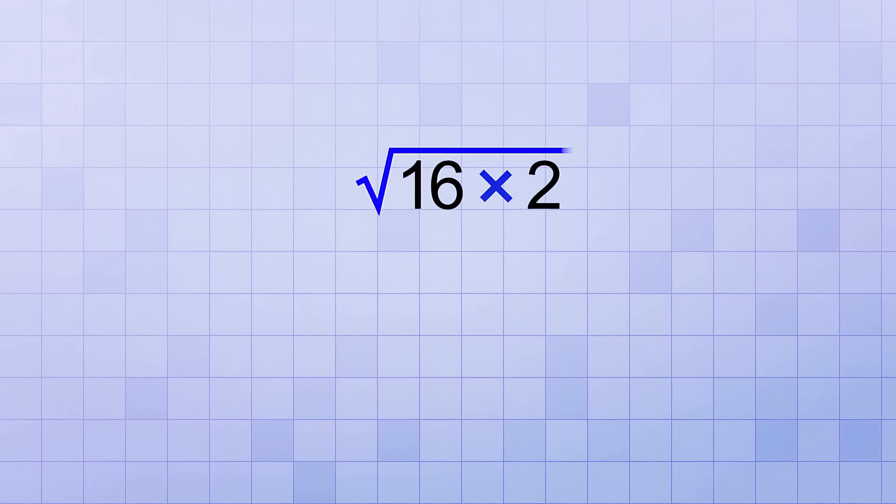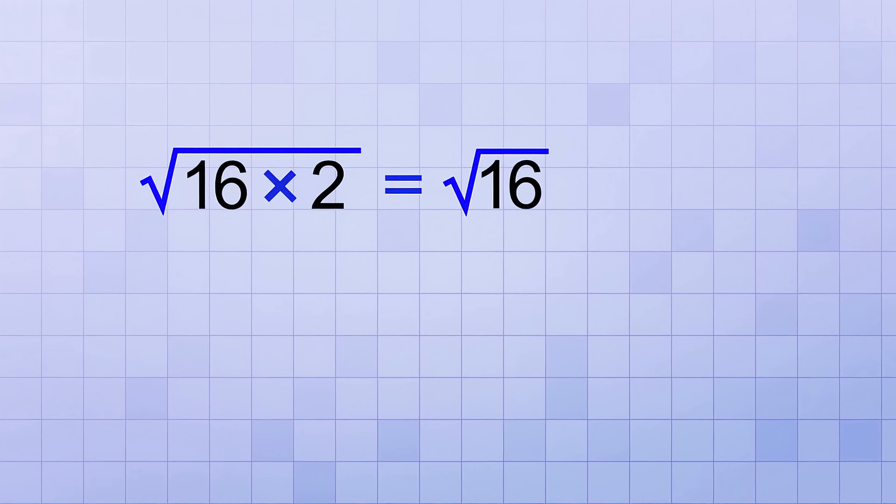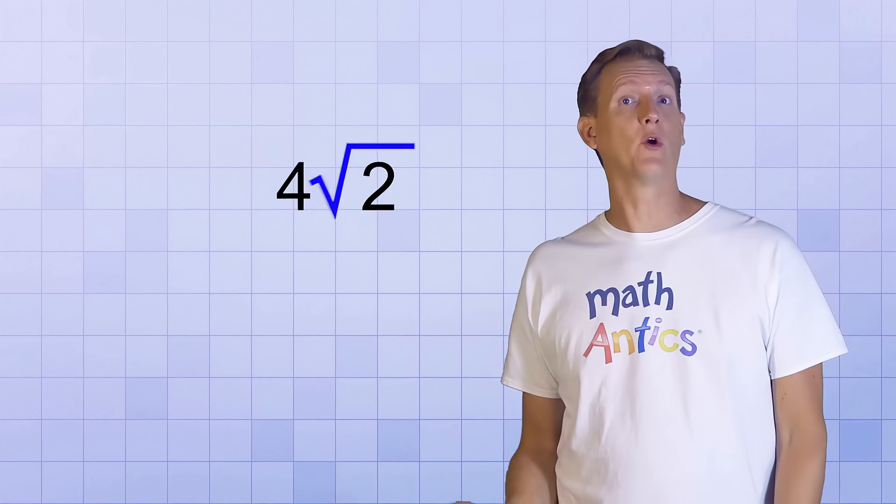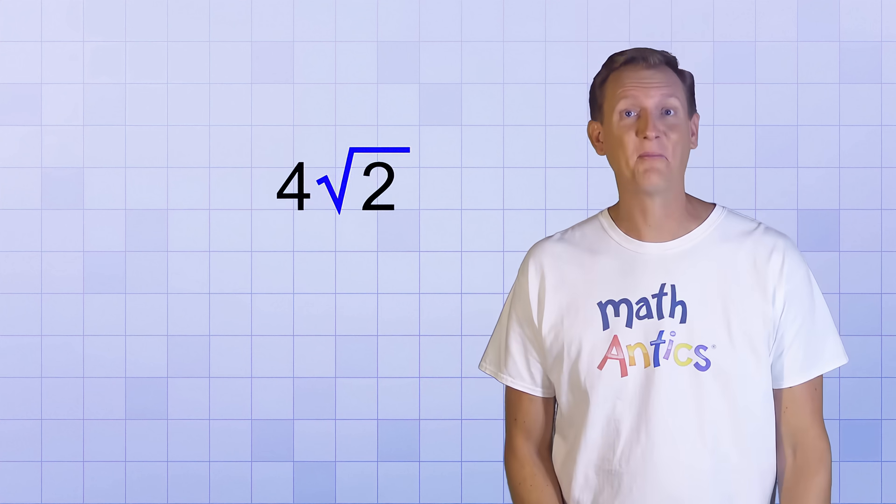We can use that rule to our advantage in our current problem, because we just figured out that the square root of 32 is the same as the square root of 16 times 2, which means we could rewrite it as the square root of 16 times the square root of 2. And as we already know, the square root of 16 can be simplified to just 4. So that gives us 4 times the square root of 2, or just 4 root 2 as a simplified version. Pretty cool, huh?